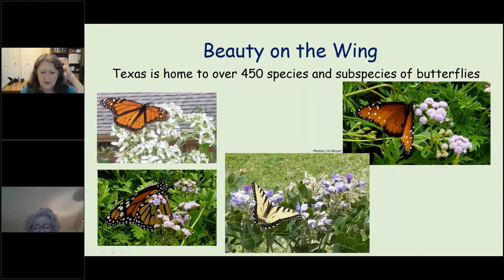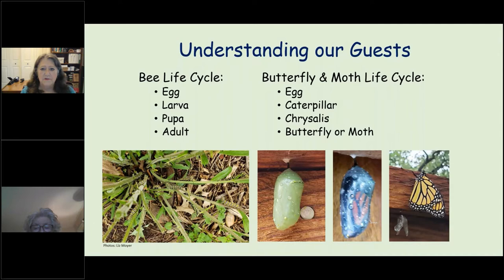Photos from my yard show monarchs on blue mist flower and frostweed, giant swallowtail, and queens — lots of different butterflies. Just a few minutes ago my husband found a swallowtail caterpillar on the parsley while watering the herb garden, which is the latest in the year we've ever had a caterpillar.